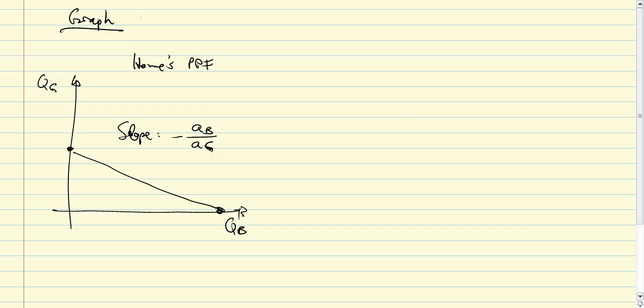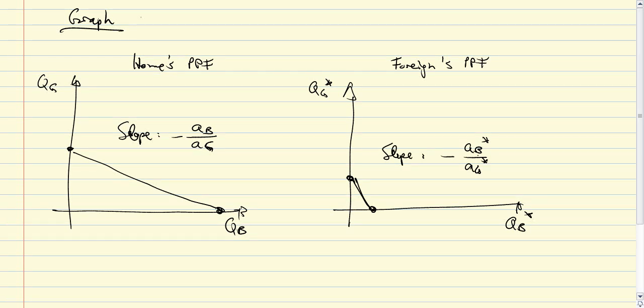So that's how home's PPF looks. And now on the other side here we get a foreign PPF where we'll draw as well the two axes, QG star here and QB star here. And then we'll draw this PPF with a fairly steep slope, apparently drawn scale larger than one, AB star over AG star. But furthermore with the foreign PPF much closer to the origin.